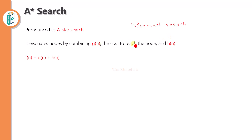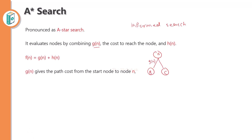What are G(N) and H(N)? Suppose we have nodes A, B, and C. G(N) is the value between two nodes — it is nothing but the path cost from the start node to the node N. We have to consider G(N) for every node, which is the path cost from the start node to node N.